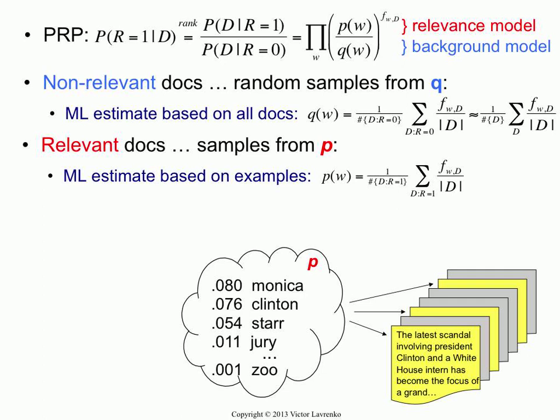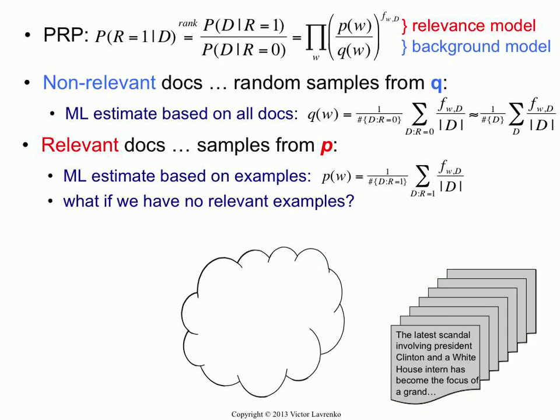If we had examples of relevant documents drawn from it, estimation would be trivial. You take each word and count how many times total it occurs in all relevant documents and divide by their total length. That would be the probability of any given word in the vocabulary. Of course, you don't have any relevant examples, and that's what makes this tricky and challenging.